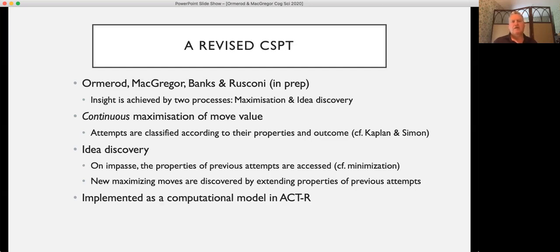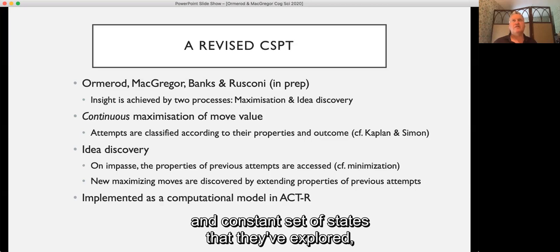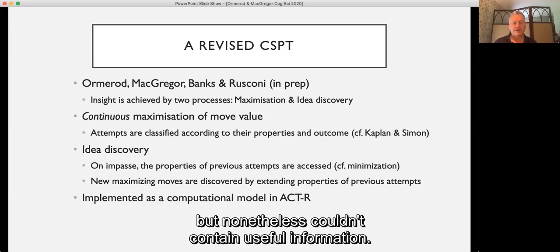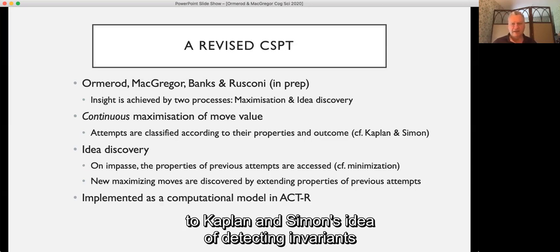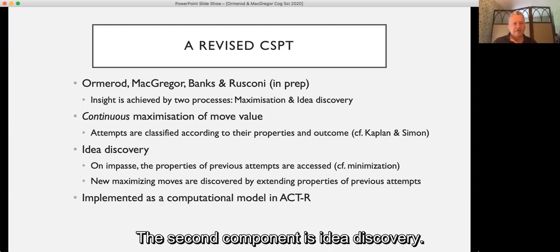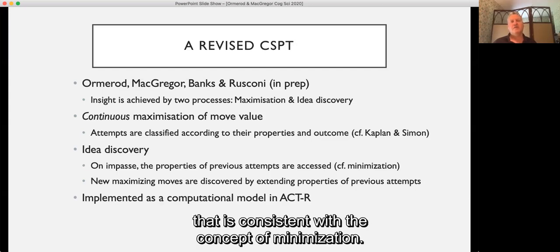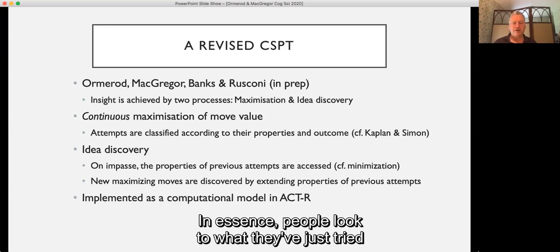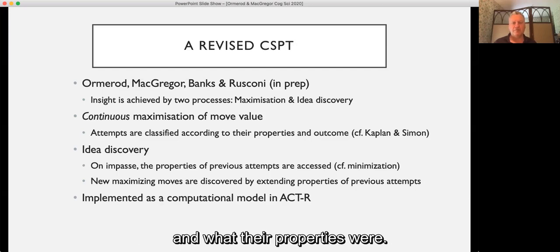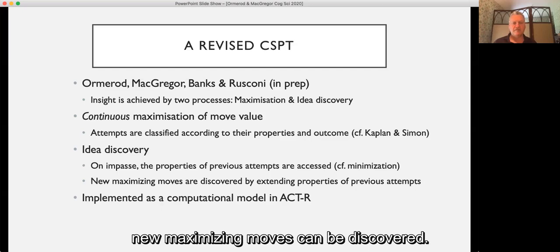But when they make an attempt, the properties of that attempt are identified and classified in memory as well as the outcome of that move. So in essence, in our theory individuals are recording a consistent and constant set of states that they've explored which may have failed but nonetheless can contain useful information. In some respects this idea is similar to Kaplan and Simon's idea of detecting invariance while solving insight puzzles. The second component is idea discovery. On reaching impasse, the properties of previous attempts that have been tried are accessed. They're accessed in a way that is consistent with the concept of minimization. In essence, people look to what they've just tried because that's the thing that they are certain about. They know what those attempts achieved and what their properties were, so they try those before seeking other information. And as a result of taking these properties and adding them to previous attempts, new maximizing moves can be discovered. We're currently implementing this as a computational model in ACT-R.